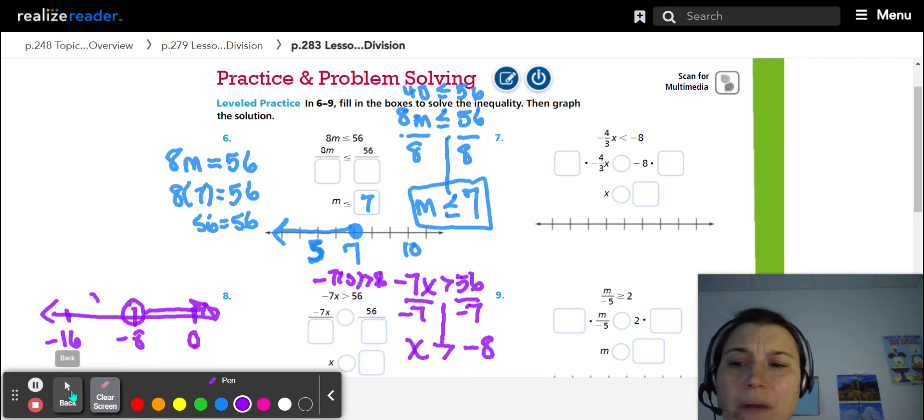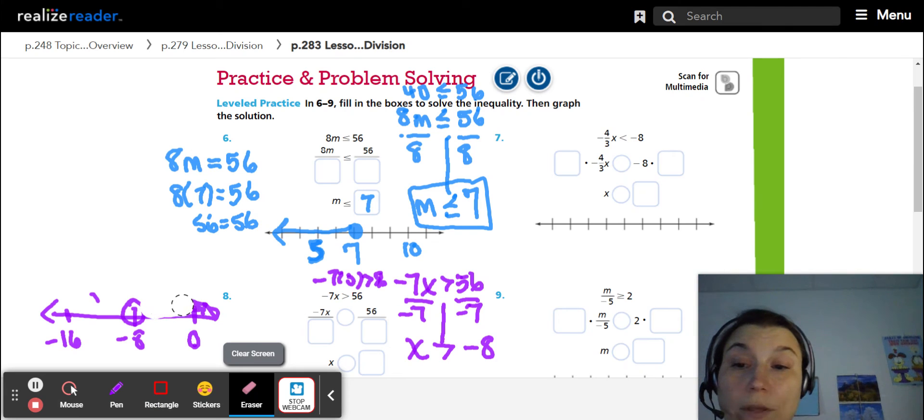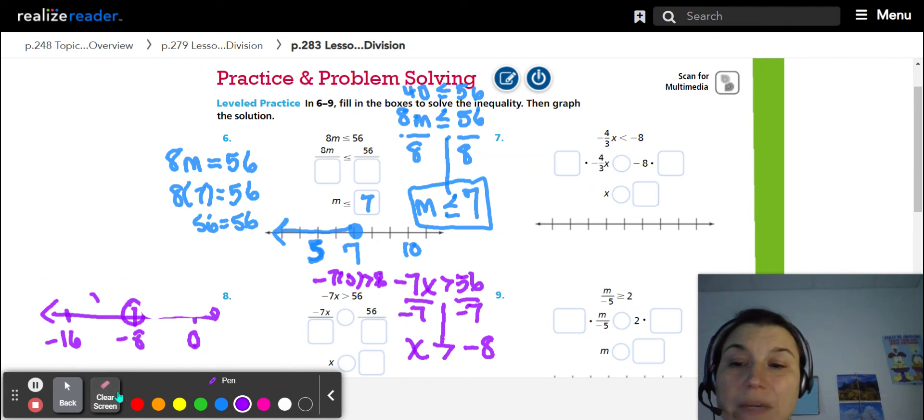So that means that I must have my arrow going the wrong way. Because if I think about it, in order to be greater than 56, and I want to multiply seven by something so that it's greater than positive 56, I must be multiplying it by a negative. So the numbers that are negative, there's some numbers that are negative, they're over here on the left of negative eight,